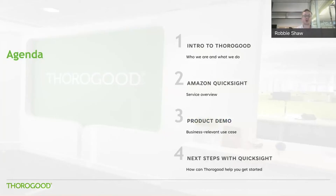Agenda for today: first of all, we're going to intro Thurigood. If you've attended our webcast before, you will have probably seen the slides, but for anyone new, it's important to let them know who we are and what we do. Then I'll get into the overview of Amazon QuickSight, followed by the product demo - to see the tool in action is always good. Finally, I'll round off with some next steps for QuickSight and how Thurigood can help you get started with the tool.